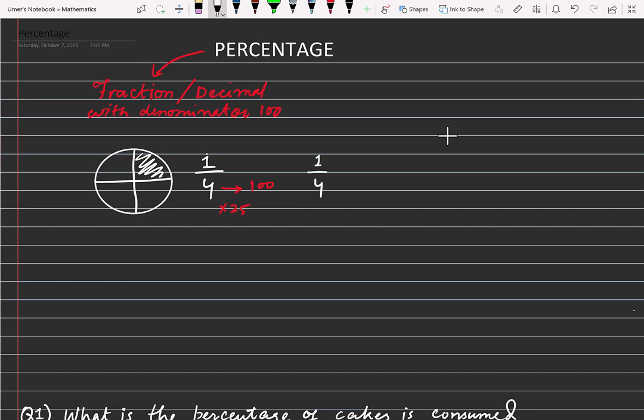And that will be representing the same fraction, because you know if a fraction is multiplied or divided by the same number, it doesn't make any difference. So if I multiply by 25/25, the new fraction I will get will be equivalent to the fraction 1/4.